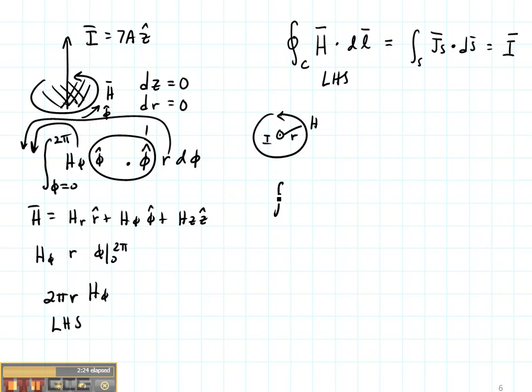So my integral of H dot DL is just going to be I, which is seven amps. And actually I need to point out that that's not actually a vector. This is a scalar value and it is the total magnitude of the current that's enclosed. So let's erase that just so we don't confuse you.